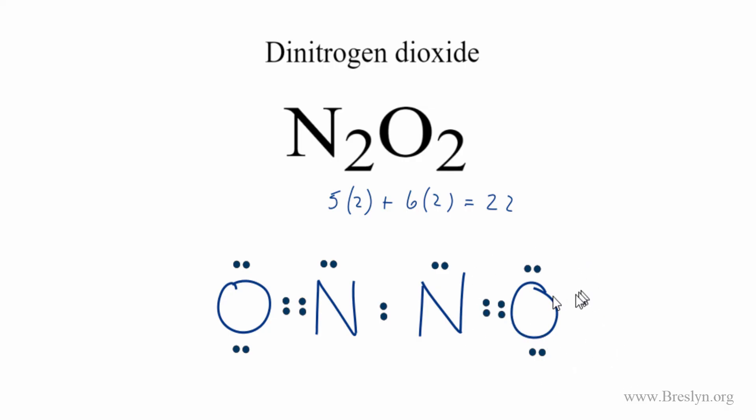Now the oxygen, it still has 8. The nitrogen, it has 8. So each atom in N2O2 now has an octet. We're using the 22 valence electrons. And this is the Lewis structure for N2O2, dinitrogen dioxide.